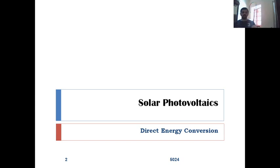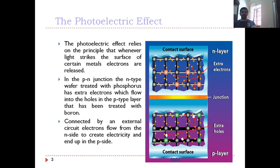As all of you know, the photoelectric effect relies on the principle that whenever light strikes the surface of certain metals, not all metals, only certain metals, electrons are released from the surface of the metal. Whenever light strikes the surface of certain metals, electrons are released and electrons obviously will move, will get attracted to the positive side of the atom.